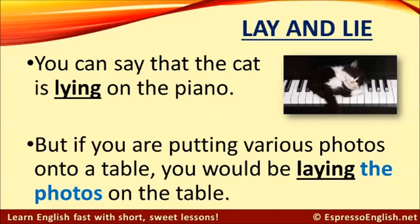Here's another example. You can say that the cat is lying on the piano — there's no direct object for the verb lie. But if you are putting various photos onto a table, you would be laying the photos on the table. Photos are the direct object.